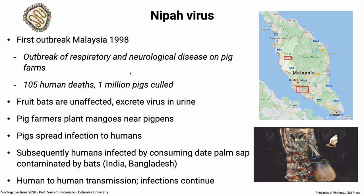Nipah virus caused an outbreak in Malaysia and Singapore in 1998 in pig farms. It started in the Perak region of Malaysia — pigs were getting sick with weird respiratory and neurological disease — then spread south in Malaysia and eventually to Singapore, which was importing infected pigs from Malaysia. The outbreak was stopped by killing approximately one million pigs in Malaysia, a major source of protein for the country, resulting in 105 human deaths among people caring for the pigs and their families.